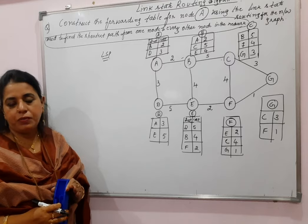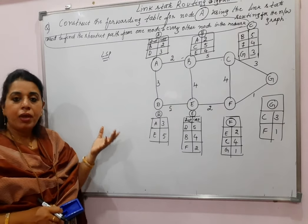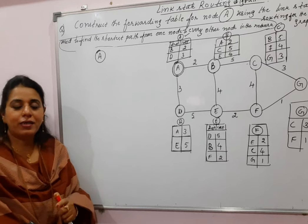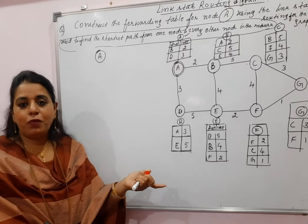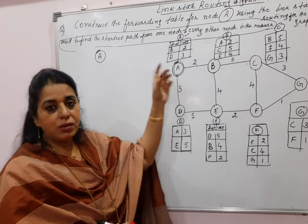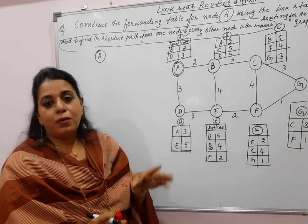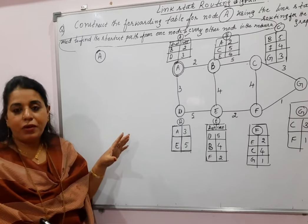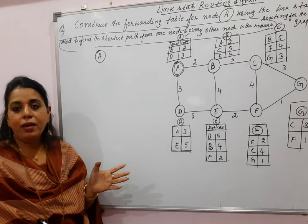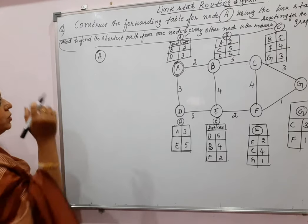To construct the forwarding table for node A, you first need to construct the least cost tree. The least cost tree shows node A reaching every other node in the network with the shortest distance. The procedure I follow is to construct the tree for the root node and then write the forwarding table. The algorithm used is Dijkstra's algorithm. Always refer to the LSP information while building the tree.